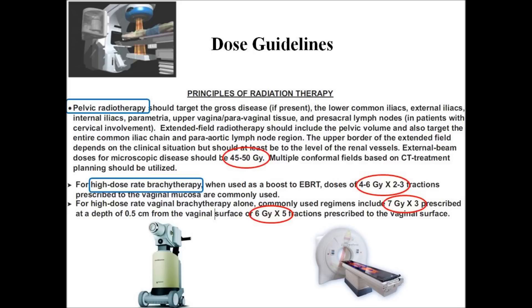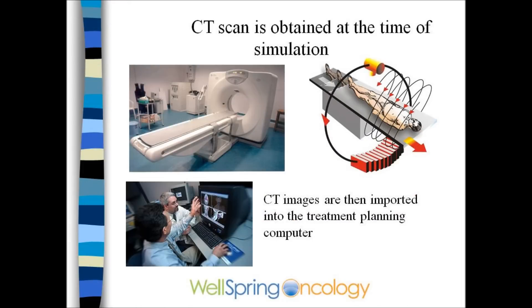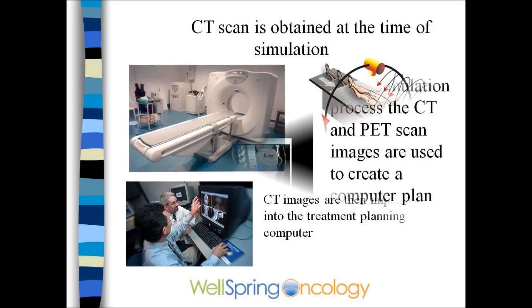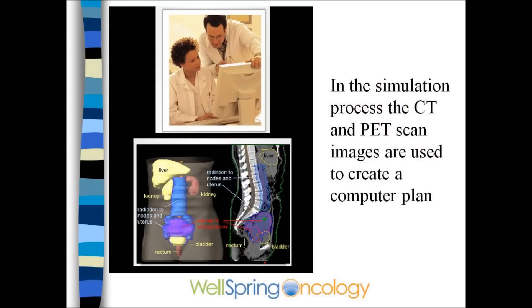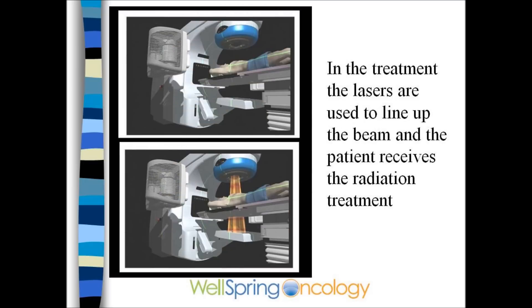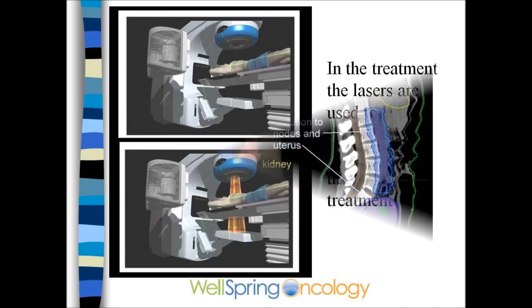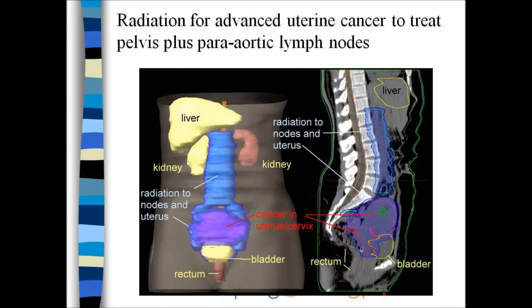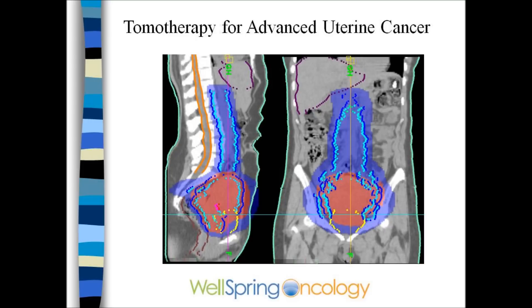The radiation doses and guidelines have been established and are standard as far as what's considered safe. If pelvic radiation is needed, the patient is simulated on a CAT scan. The anatomy is drawn into the computer. Often PET scans will be fused with the CAT scans. Treatments incorporate using lasers to target the tattoos and hit the proper area. A radiation cloud can be developed to surround the pelvic and para-aortic lymph nodes. These are typical images from an image-guided IMRT approach.